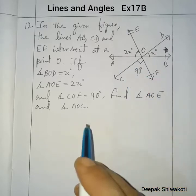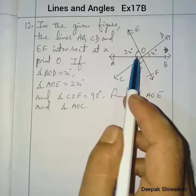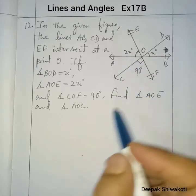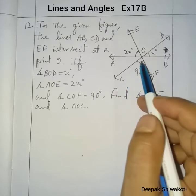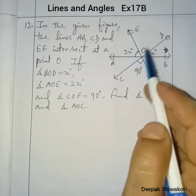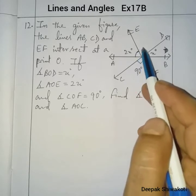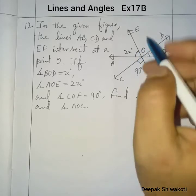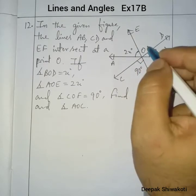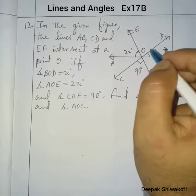Now here, angle AOE is given as 2x degrees. If you see here, angle COF is vertically opposite to angle EOD. That means these two angles are equal, so angle EOD is also 90 degrees, because the vertically opposite angle to COF is 90 degrees. So these two angles are equal, making this 90 degrees as well.